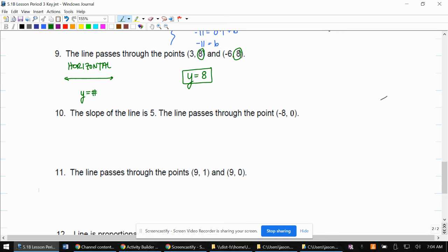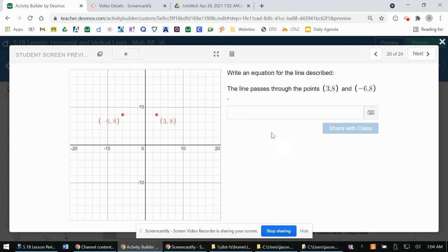When we type this in our Desmos activity, we'll also get confirmation that we did this correct. Let's go in here. y equals 8. There it is. That line passes through those two points.